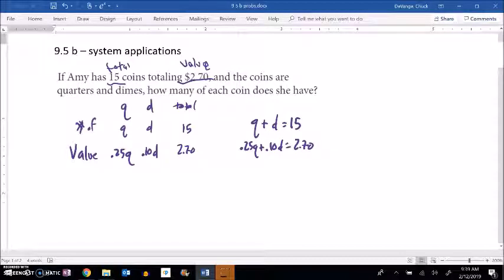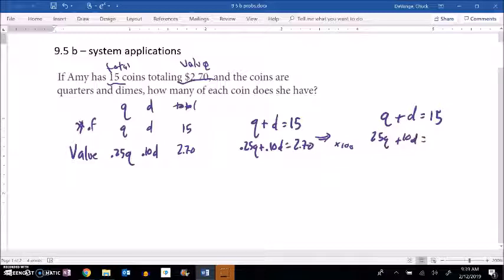0.25Q + 0.10D = 2.70. I think what I'll do is multiply this bottom equation by 100 because if I do that I won't have decimals to deal with. If you're comfortable with the decimals you don't have to do that. It's sometimes nice to have one less thing to keep track of. So if I multiply by 100 all those decimal places move over two places: 25Q + 10D = 270.